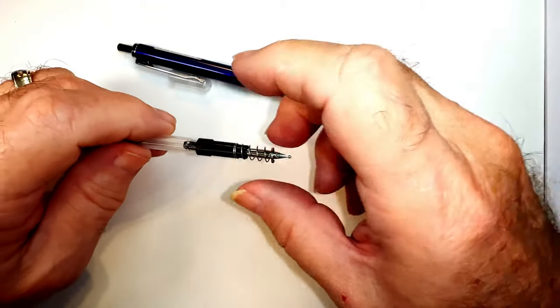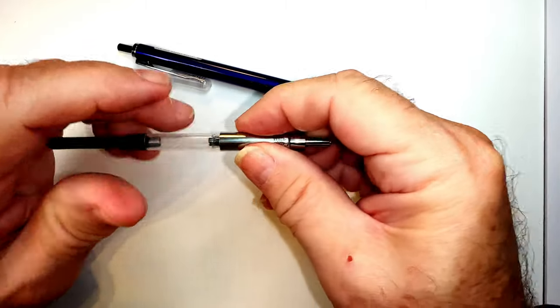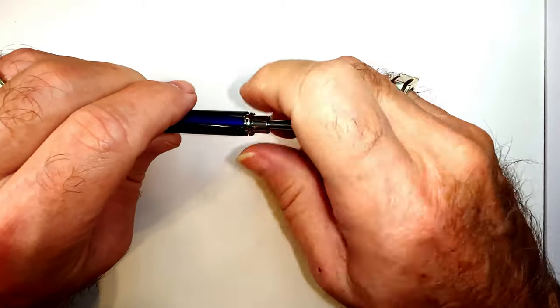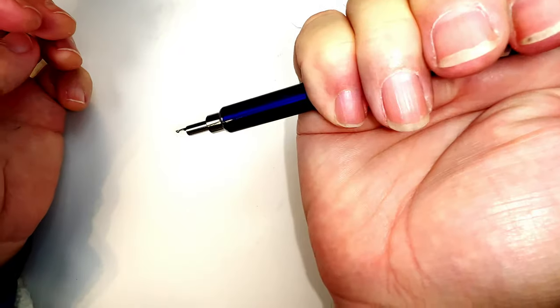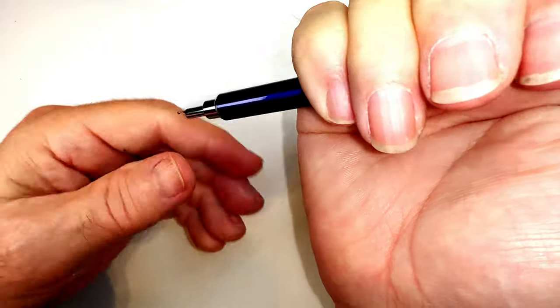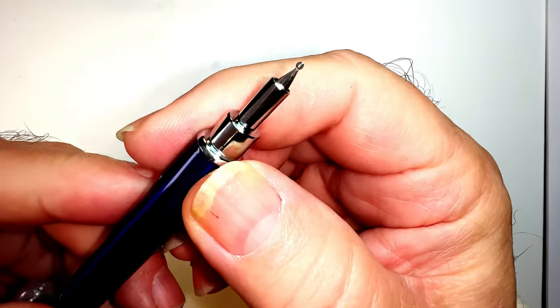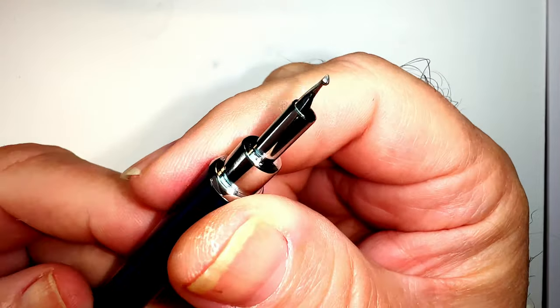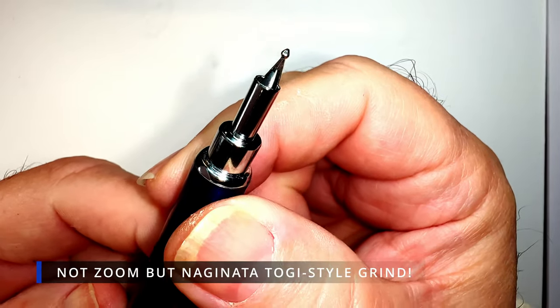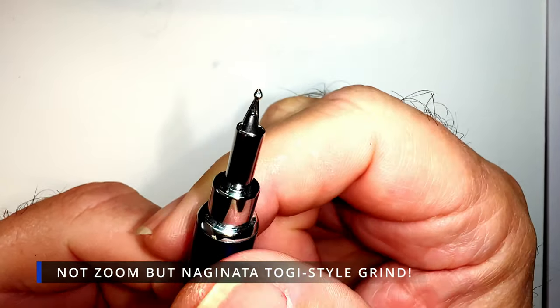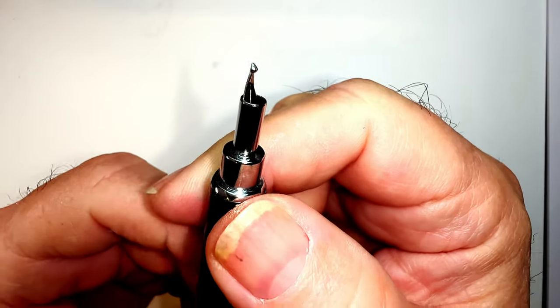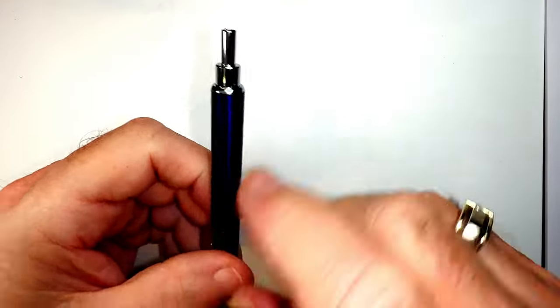And then we put the converter back on, the spring goes over there, the hood goes on the front, and the whole thing just screws together. And there you go. So that nib that I put on there is one that I purchased because it has a zoom type grind to it that I'm interested in trying out.